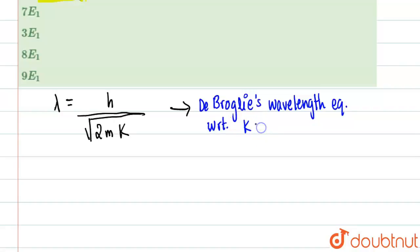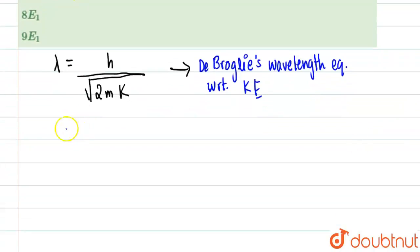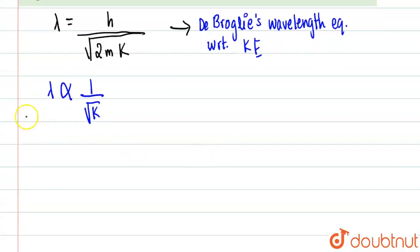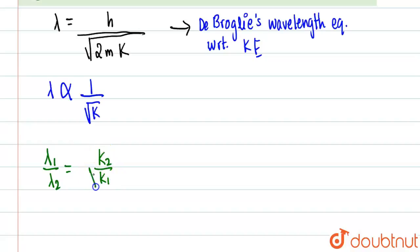From this equation, we can tell that λ is inversely proportional to the square root of kinetic energy. So we can write: λ₁ divided by λ₂ is equal to the square root of (k₂ / k₁). λ₁ is directly proportional to 1 over √k₁.